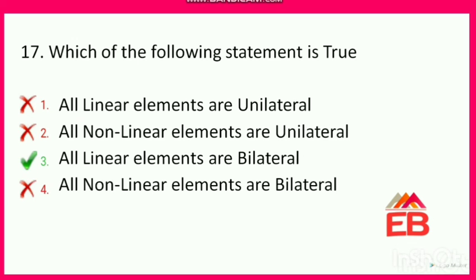Next: which statement is true about linear elements? Options are: all linear elements are unilateral, all nonlinear elements are unilateral, all linear elements are bilateral, or all nonlinear elements are bilateral. The correct option is option 3 — all linear elements are bilateral, meaning current can flow in either direction (clockwise or anticlockwise).